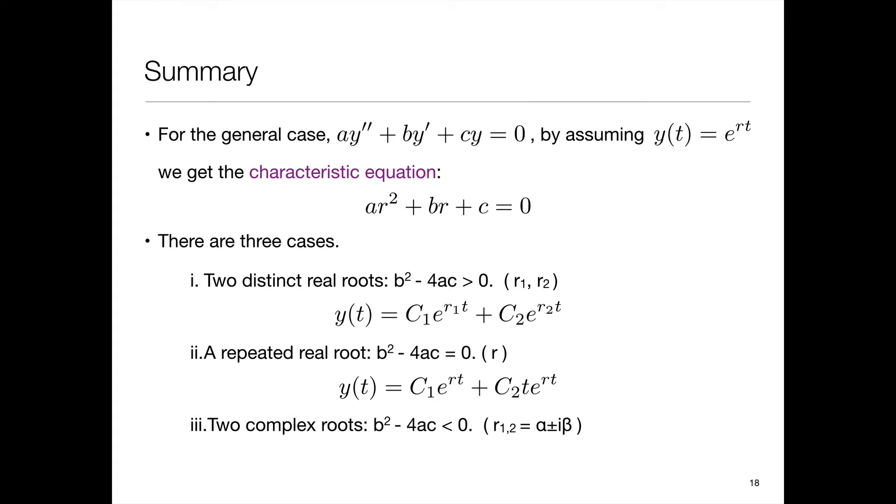And the third case is when the discriminant is negative and that gives us complex roots. I'll call those two complex roots alpha plus i beta.